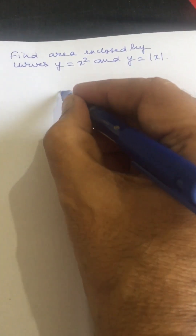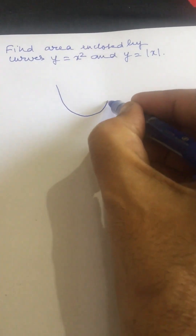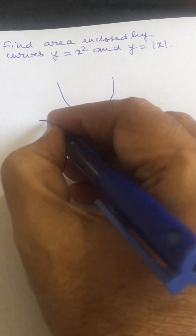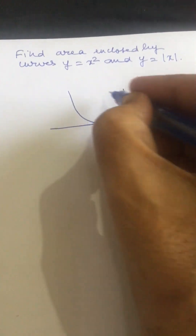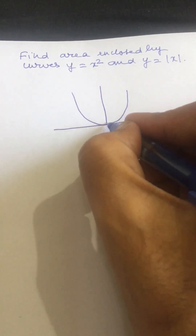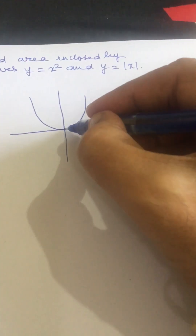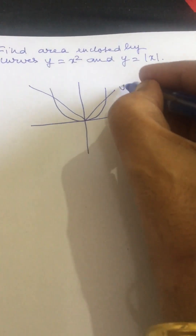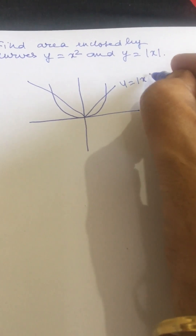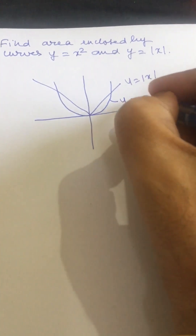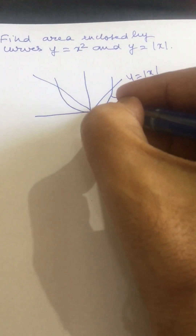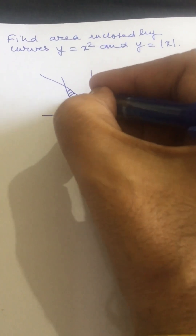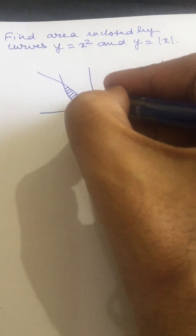This is our y equals x squared, with the x-axis and y-axis shown. This is y equals absolute value of x and this is y equals x squared. So this area is enclosed by these two curves, and we have to find out this shaded area.